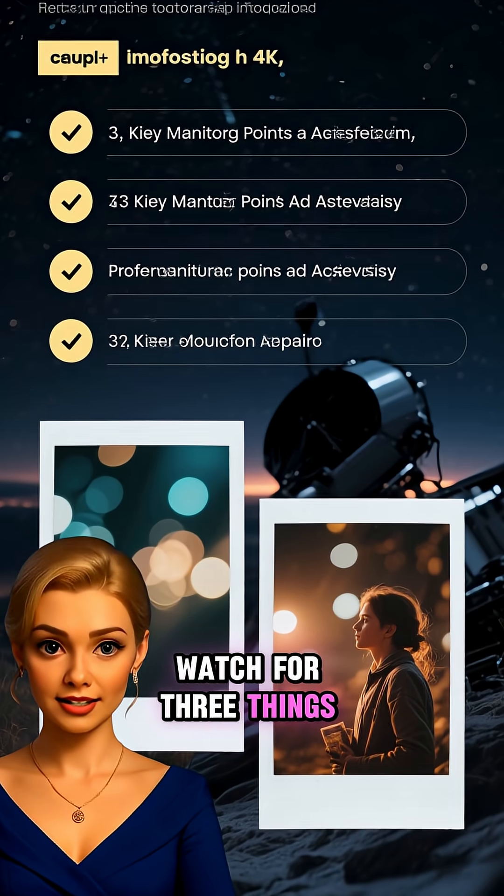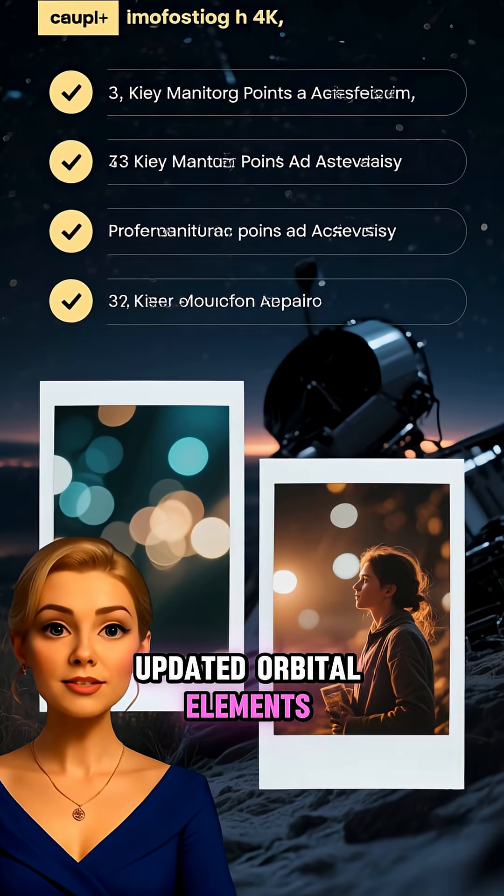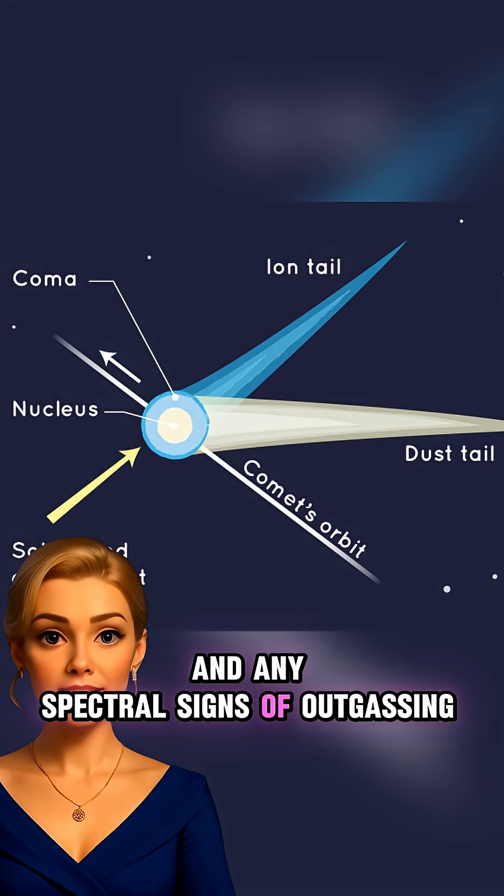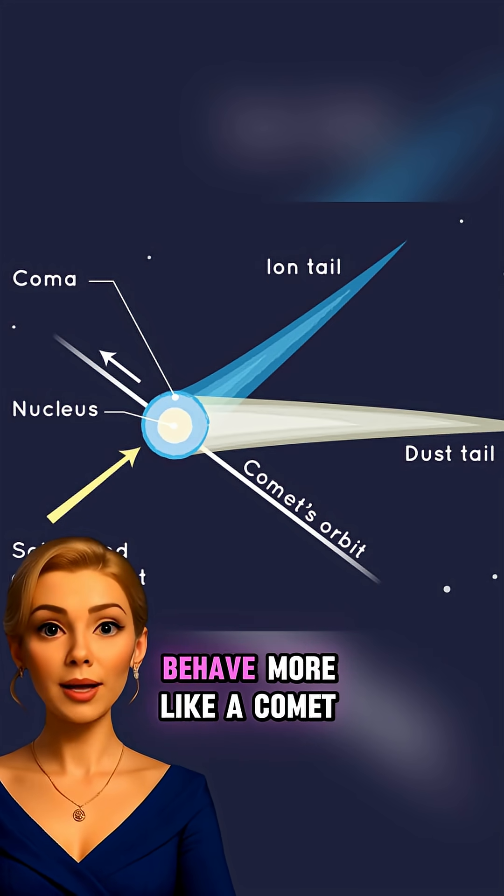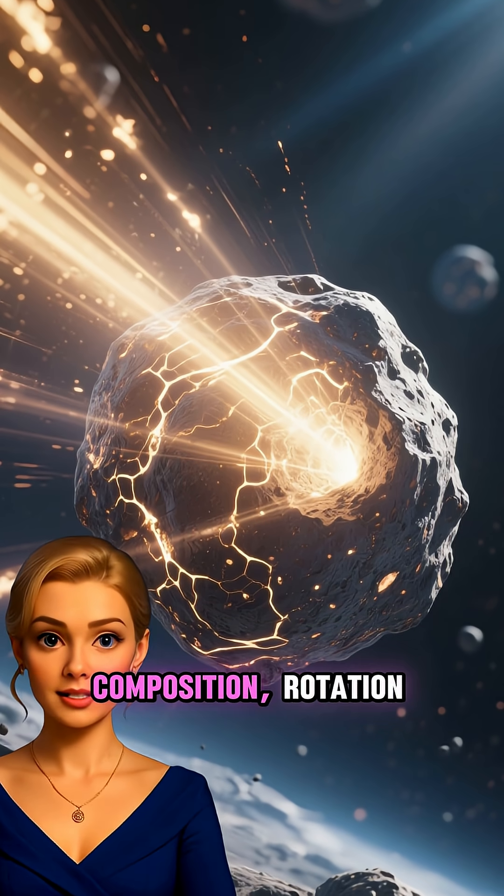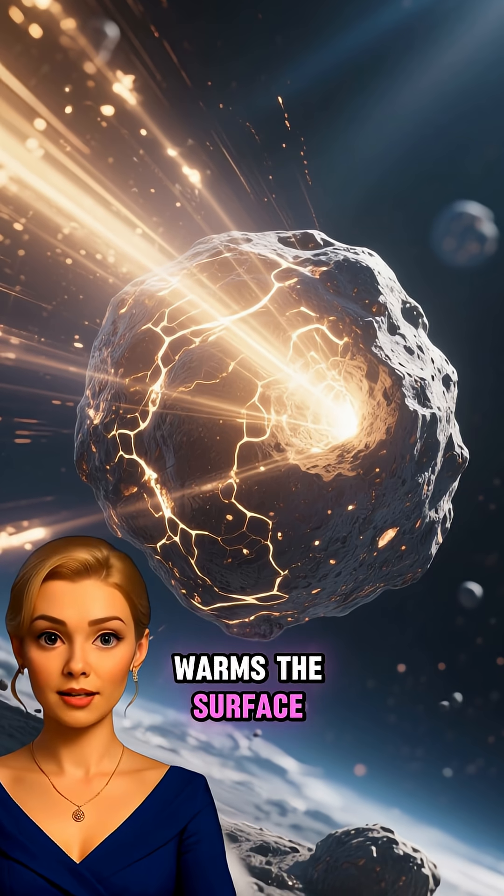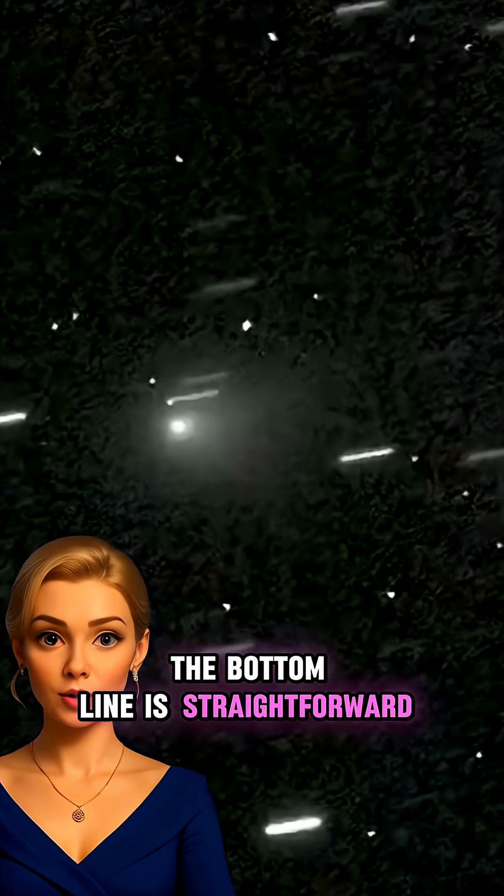If you want to follow this scientifically, watch for three things: changes in brightness over time, updated orbital elements, and any spectral signs of outgassing that would make it behave more like a comet. Those measurements tell us about composition, rotation, and how the trajectory evolves as sunlight warms the surface.